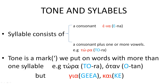First of all, what is a syllable? There are actually two cases of what a syllable is. A syllable can consist of either one letter. For example, in the word ena, which means one, the letter epsilon is a syllable by itself.